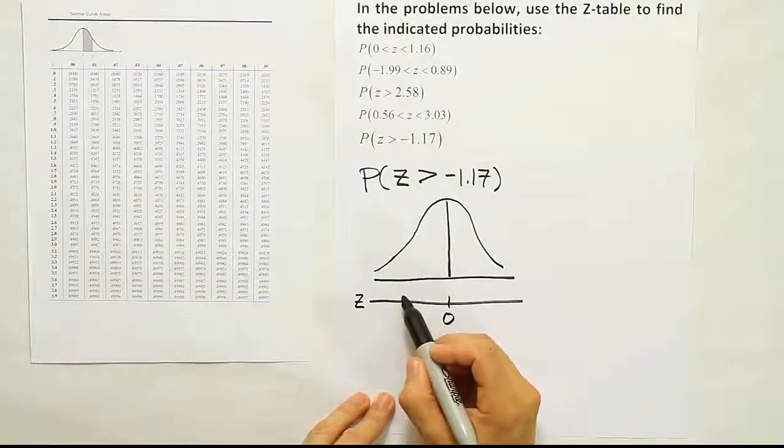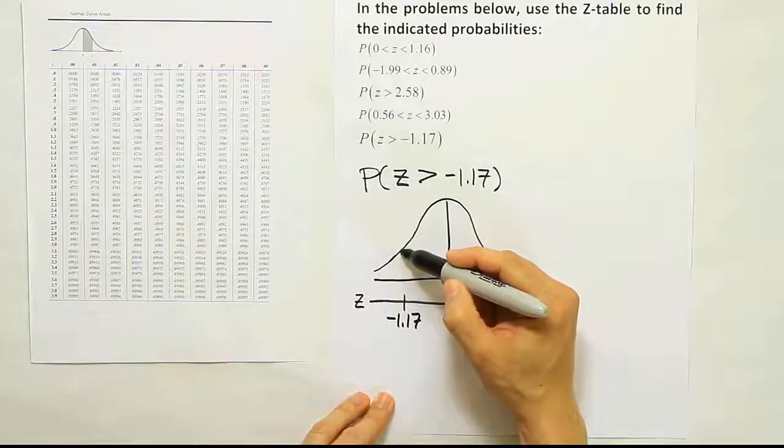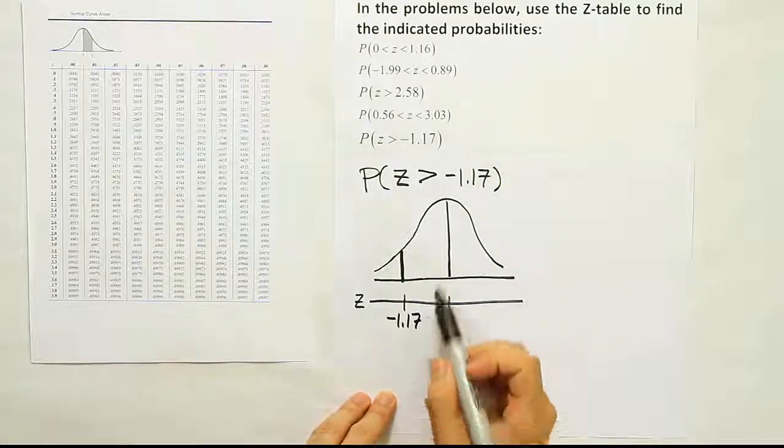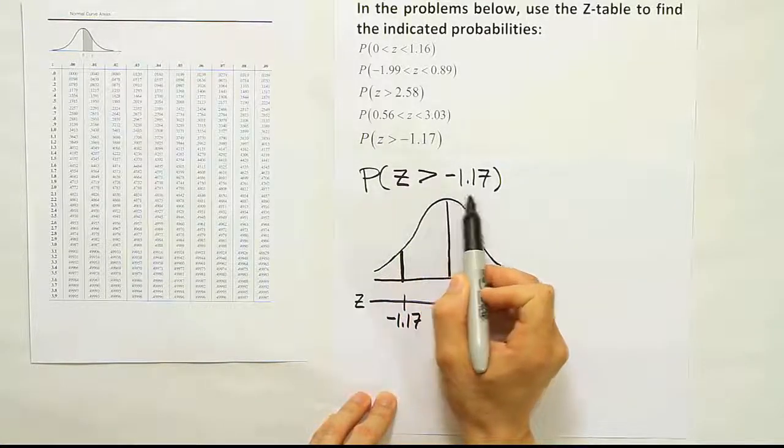Negative 1.17 would be on the left since it's negative, so I'll put negative 1.17 here. Draw a little line above on the curve to indicate where that is, and let's see what we should shade. It says the probability that z is greater than negative 1.17.